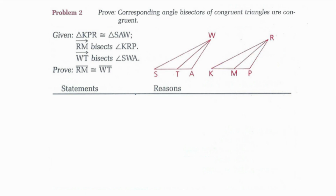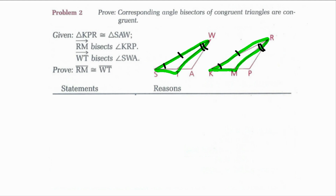Now looking at my givens, I'm given the entire triangles are congruent, which would mean all the angles and all the sides are congruent to the corresponding parts of the other triangle. If my entire triangles are congruent, then segment SW is congruent to segment KR, and angle S would be congruent to angle K, and angle SWA would be congruent to angle KRP. Now I can use the fact that these are angle bisectors to show that the smaller angles in triangle STW and triangle KMR — which would be angle SWT and angle KRM — are congruent because I would use the division property. So these two smaller angles are congruent, and now I have my triangles congruent by angle side angle. If my triangles are congruent, then segment RM is congruent to segment WT by CPCTC.